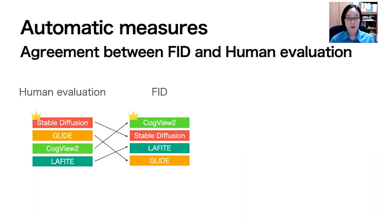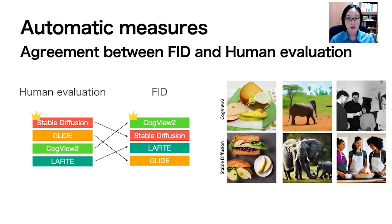We compared FID and collective human ratings for different models. We observed a significant difference between the rankings of models based on FID and human evaluation. The results showed that humans preferred Stable Diffusion, while FID favored COGVIO2. Looking at the images, COGVIO2 has more artifacts, but FID doesn't catch them well. This means using only FID to check quality can be inconsistent with what people actually perceive, so it's important to consider human evaluation too.